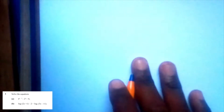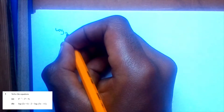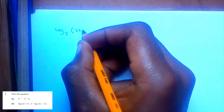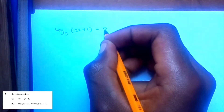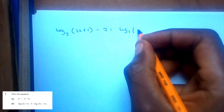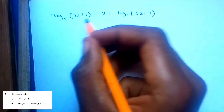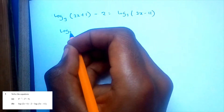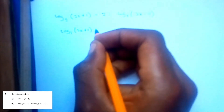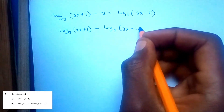Question 3b says: log base 3 of (2x plus 1) minus 2 is equal to log base 3 of (3x minus 11). We bring terms to one side: log base 3 of (2x plus 1) minus log base 3 of (3x minus 11) is equal to 2.